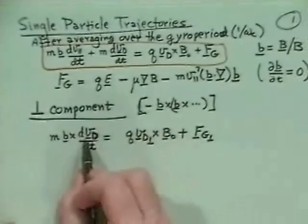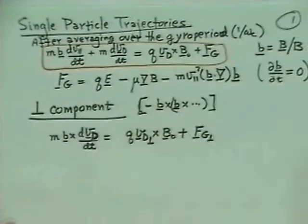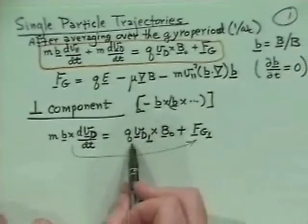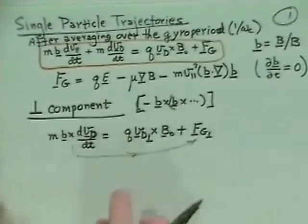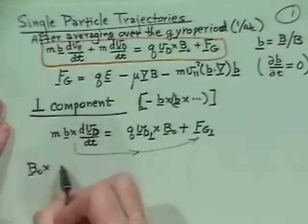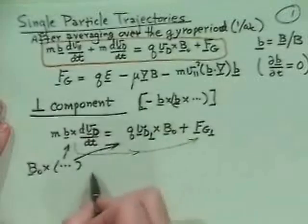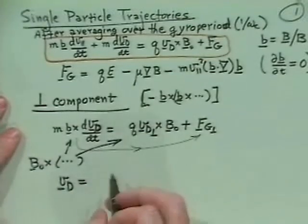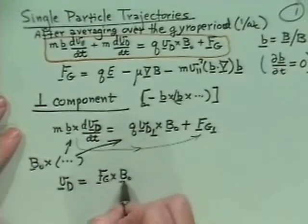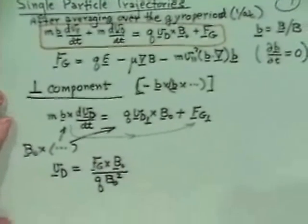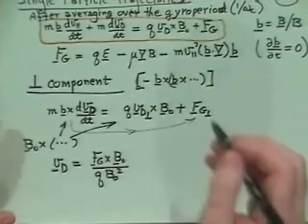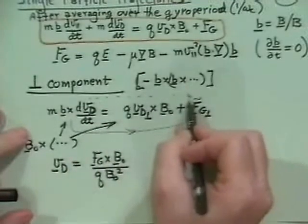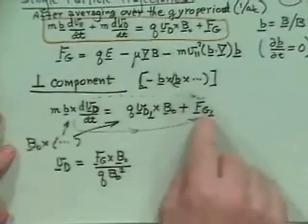This dv/dt term — we have in mind sort of small drifts, so what we end up doing is putting this together with the curvature drift velocity. If we then take B₀ cross this whole equation — the same mechanics we've been doing before — what you find is that the drift velocity is simply the force on the guiding center cross B₀, all divided by B₀², with a factor of q. I'll call it F_tilde on the guiding center, where the tilde means I included that inertial term dv_drift/dt into the force.